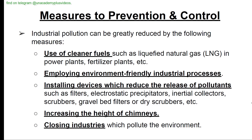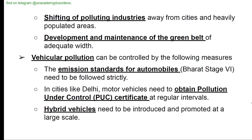Industrial pollution can be reduced by: use of cleaner fuels such as LNG in power plants and fertilizer plants; employing environment-friendly industrial processes; installing devices like filters, electrostatic precipitators, inertial collectors, scrubbers, and gravel bed filters; increasing the height of chimneys; closing polluting industries; shifting polluting industries away from cities; and development and maintenance of green belts.